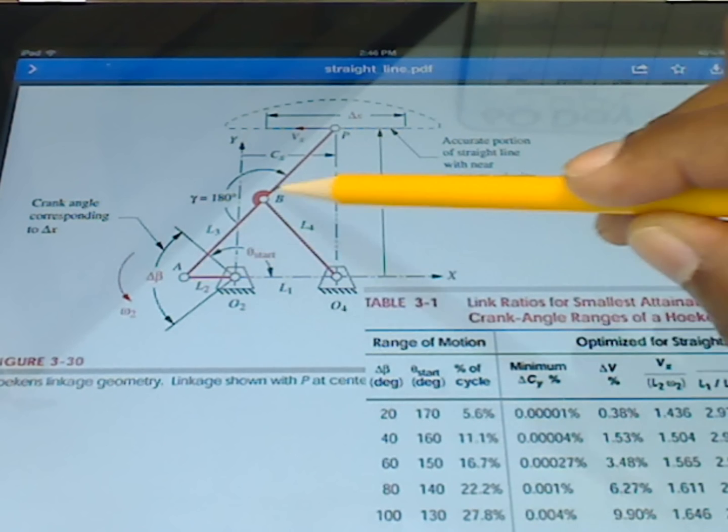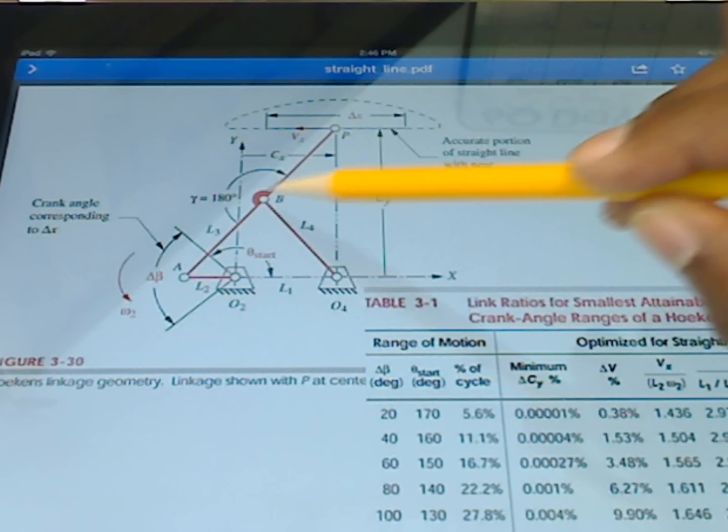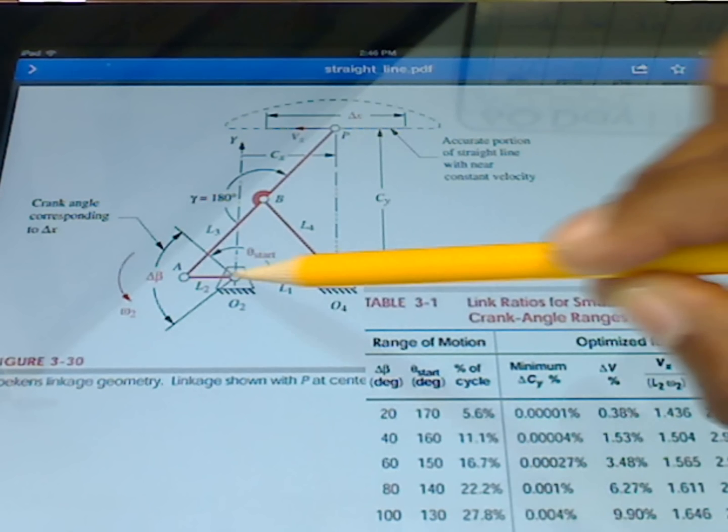So here we have the crank, we have the coupler, and the coupler is extended, collinear extended here up to the coupler point. And then we have the rocker and our ground link here.